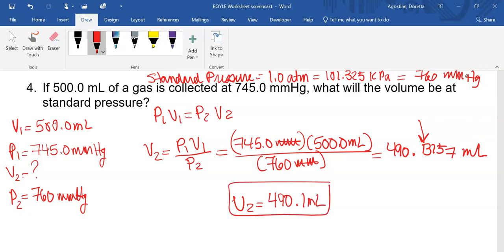Now, quick check. What happened here? Our pressure changed, and it increased. So our volume had to decrease. Our volume went from 500 down to 490. It decreased. So life is good.